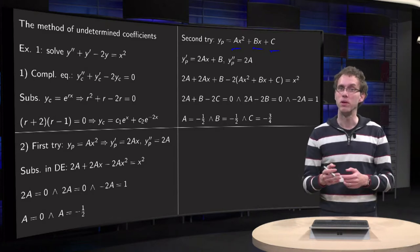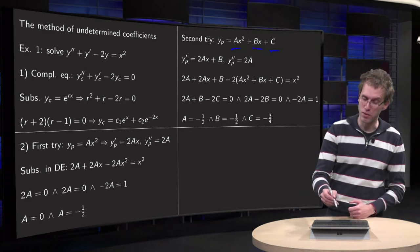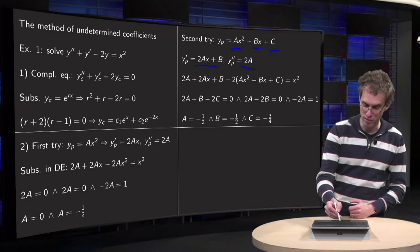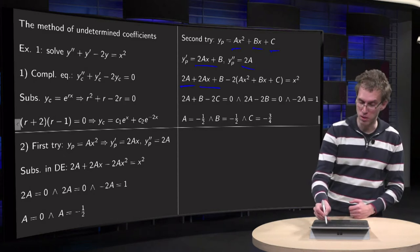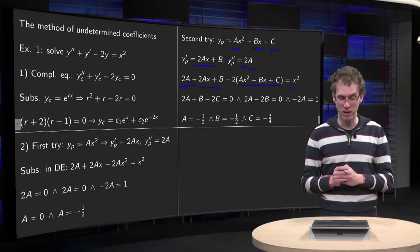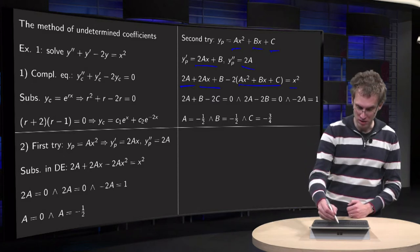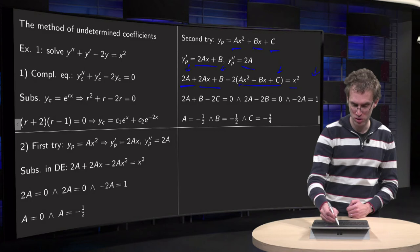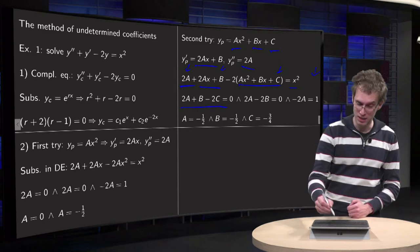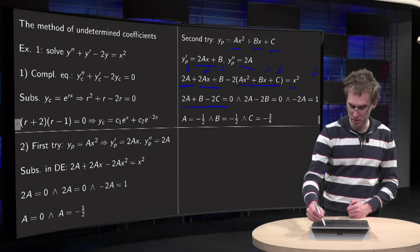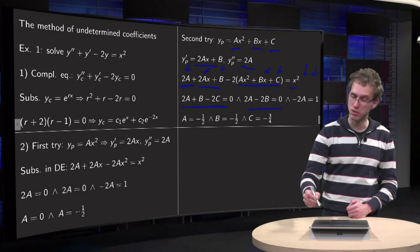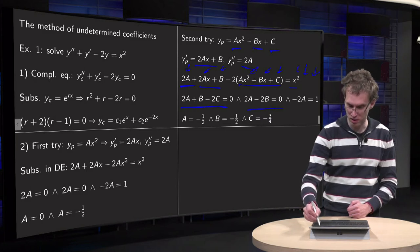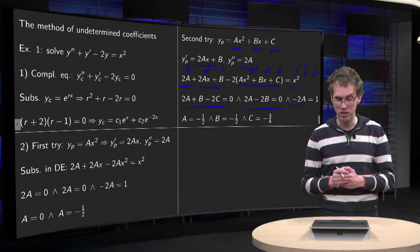Maybe we are now successful this time. We compute again yp', yp'', and plug them into our differential equation: y'' + y' - 2y = x². We compare left and right-hand sides. For the constant terms: 2a + b - 2c = 0 (first condition). For the x terms: 2a - 2b = 0 (second condition). For the x² terms: -2a = 1.